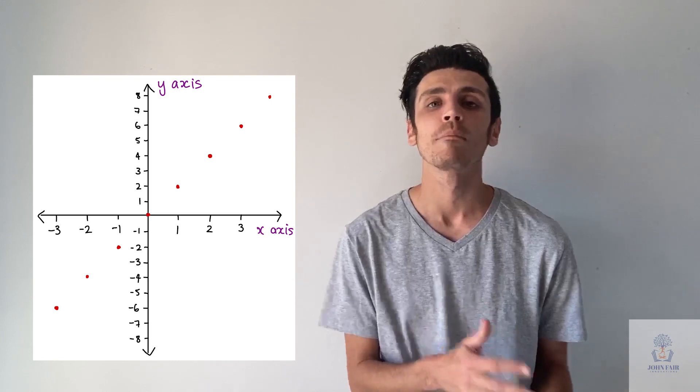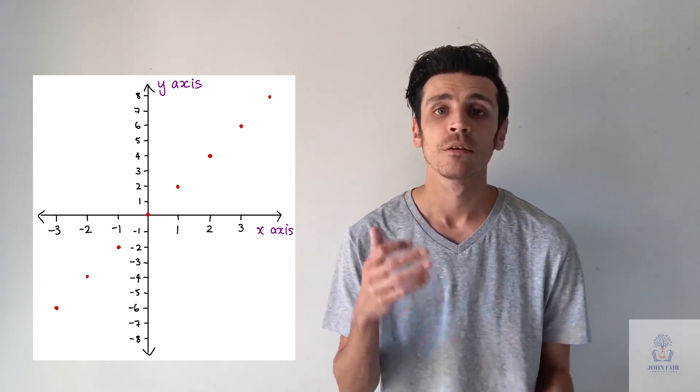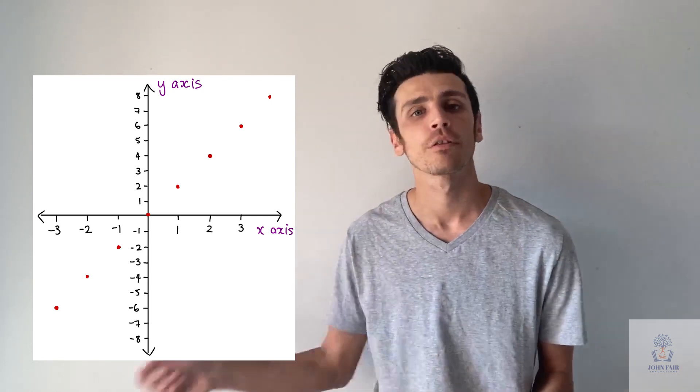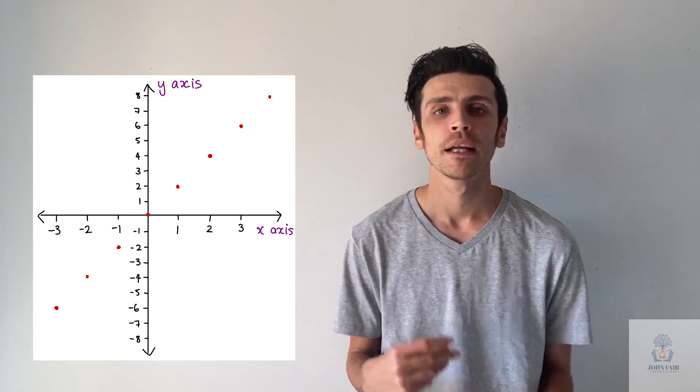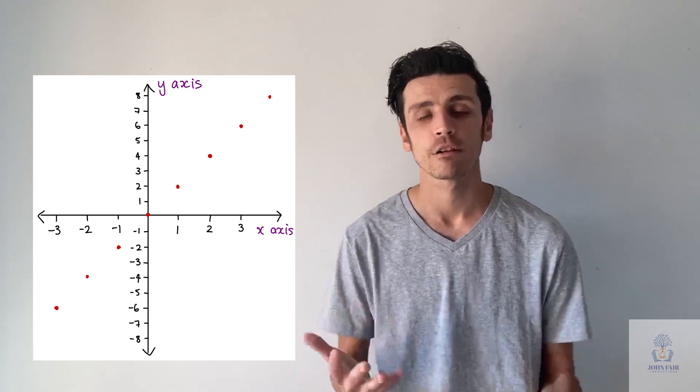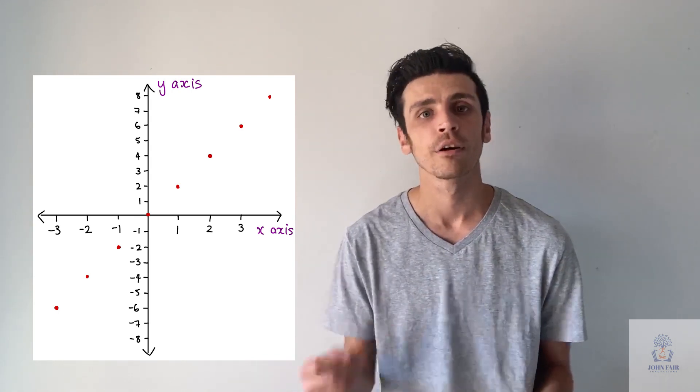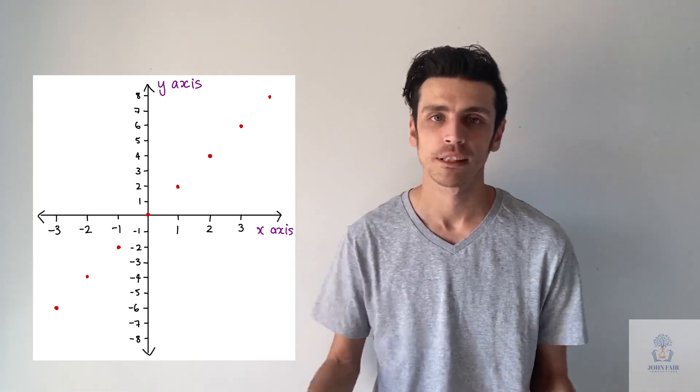Every time we put one more number into x, so 0, 1, 2, 3, constantly as we're going up, the rate of the line increases by 2. So 0, 2, 4, 6, 8, 10, so on and so forth.